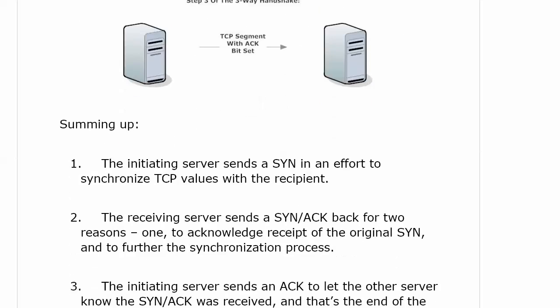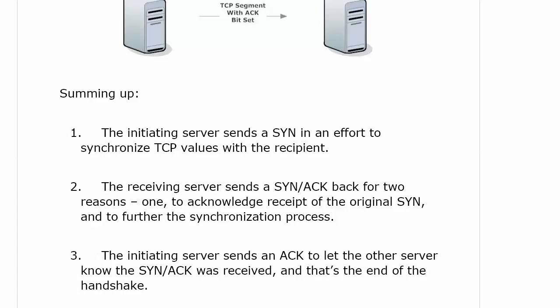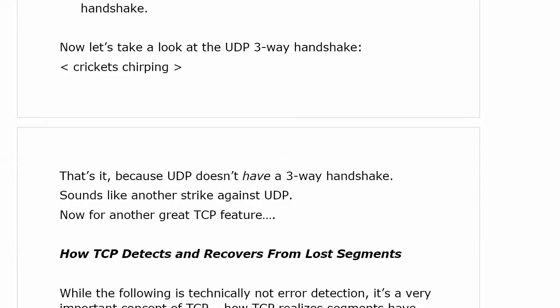Summing up: the initiating server sends a SYN to synchronize TCP values with the other endpoint. The receiving server sends a SYN-ACK back for two reasons — to acknowledge receipt of the original SYN and to further the synchronization process. Finally, the initiating server sends an ACK to let the other server know the SYN-ACK was received, and that's the end of the handshake. Now let's take a look at the three-way handshake in UDP. There isn't one.